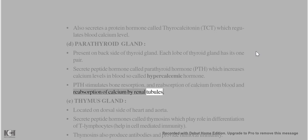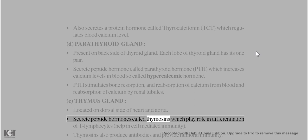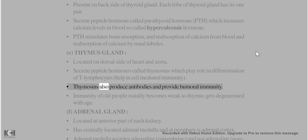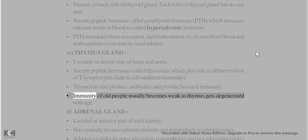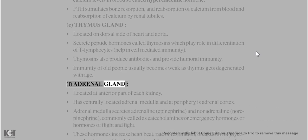Thymus gland is located on the dorsal side of the heart and aorta. It secretes peptide hormones called thymosins, which play a role in differentiation of T-lymphocytes and help in cell-mediated immunity. Thymosins also promote antibody production and provide humoral immunity. Immunity of old people usually becomes weak as the thymus degenerates with age.